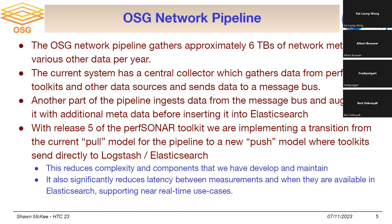We are currently in the middle of a pipeline transition. This OSG network pipeline is responsible for getting about six terabytes of network metrics and associated metadata per year from all of these perfSONAR nodes and other data systems. We're transitioning from a pull model to a push model, where the toolkits directly write into Elasticsearch via Logstash. This reduces complexity and the number of components we have to maintain, and significantly reduces latency — instead of 15 to 20 minutes between measurement and availability, we can get it within seconds in many cases.